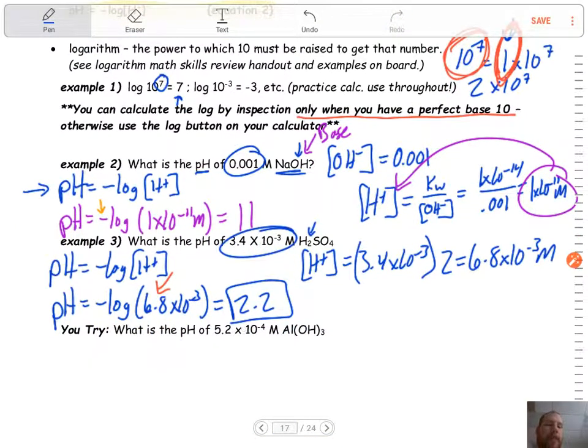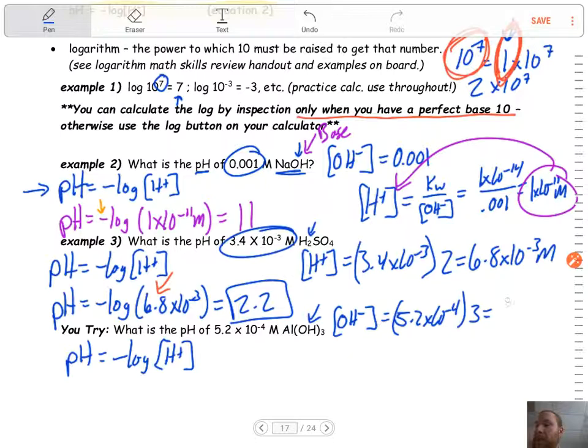Last problem down here. Try this on your own. First question, what's my pH formula? Negative log of the hydrogen ion concentration. Ask yourself, do I have an acid or a base? I've got a base. So I'm going to have to do a little bit extra work. First things first, get my hydroxide ion concentration. 5.2×10^-4. But how many hydroxide ions do I have? I have three. So I've got to triple that. When I triple it, I get 1.56×10^-3 molar.